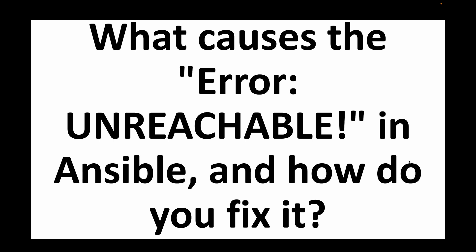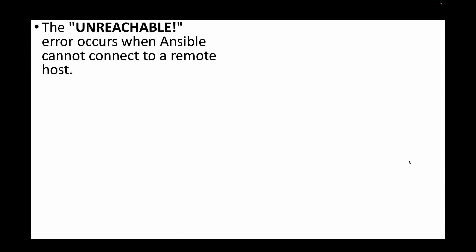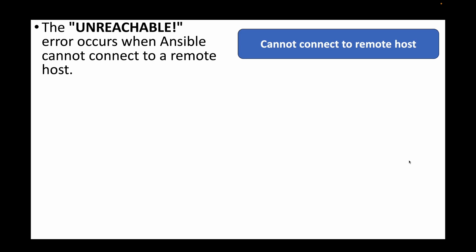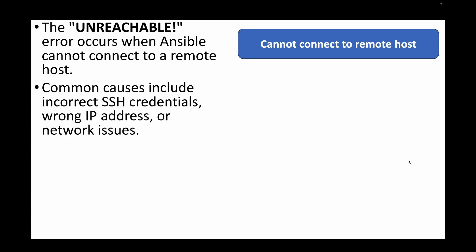The first question is: what causes the error 'unreachable' in Ansible and how do you fix it? This error generally occurs when Ansible is not able to connect to the remote machines. Ansible is our control machine and it needs to connect to remote machines to execute playbooks or scripts. Whenever Ansible is not able to connect to the remote machines, you will see this error.